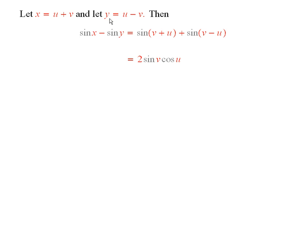We'll let x equal u plus v, and we'll let y equal u minus v. Then sine x minus sine of y equals the sine of x, because x is u plus v, minus the sine of u minus v.